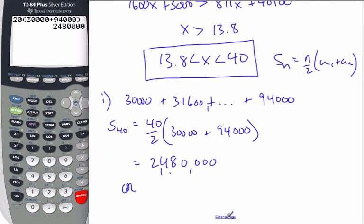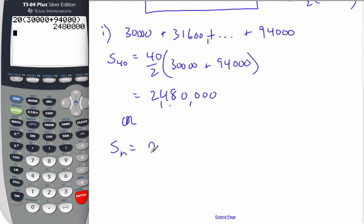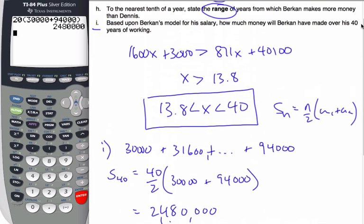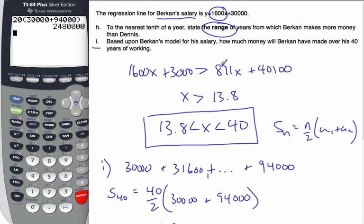Or I could have done it this way. The other formula says S sub n is equal to n over 2, 2u1 plus n minus 1 times d. Which is then S sub 40, 40 over 2, u1 is my first term which is 30,000, n is 40 so it's 39, d is my slope of 1600. And again when I do that I'll get 2,480,000. Lots of information in these particular linear regression, and this example has covered most of the ideas if not all of them that I can think of for linear regression information.